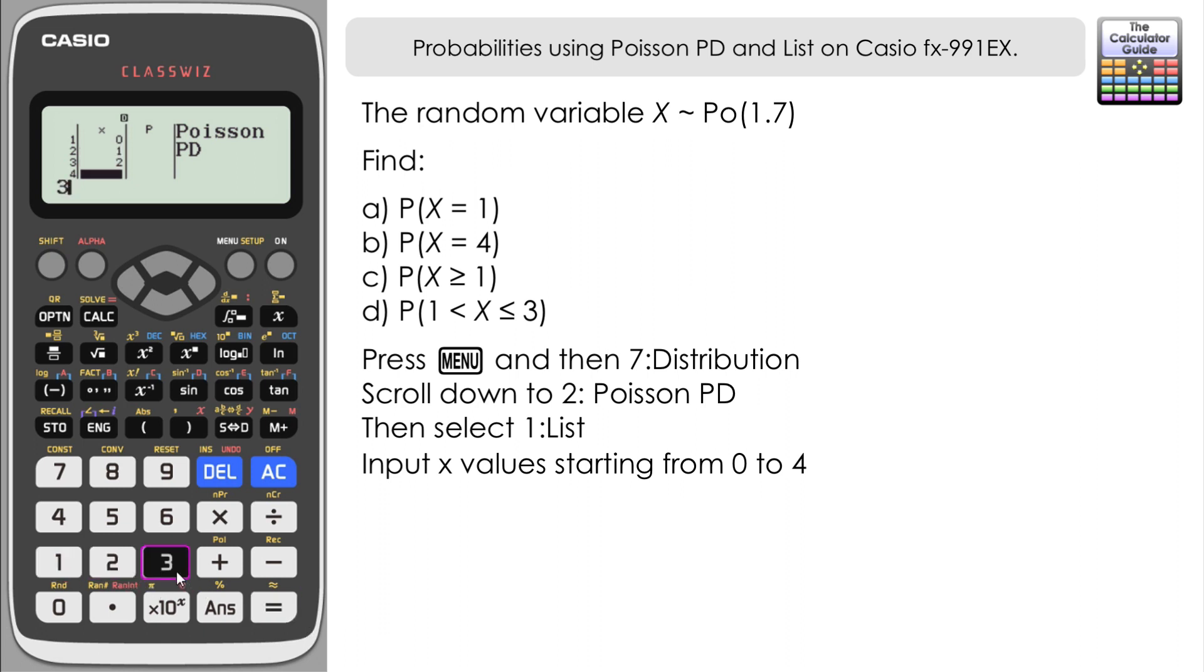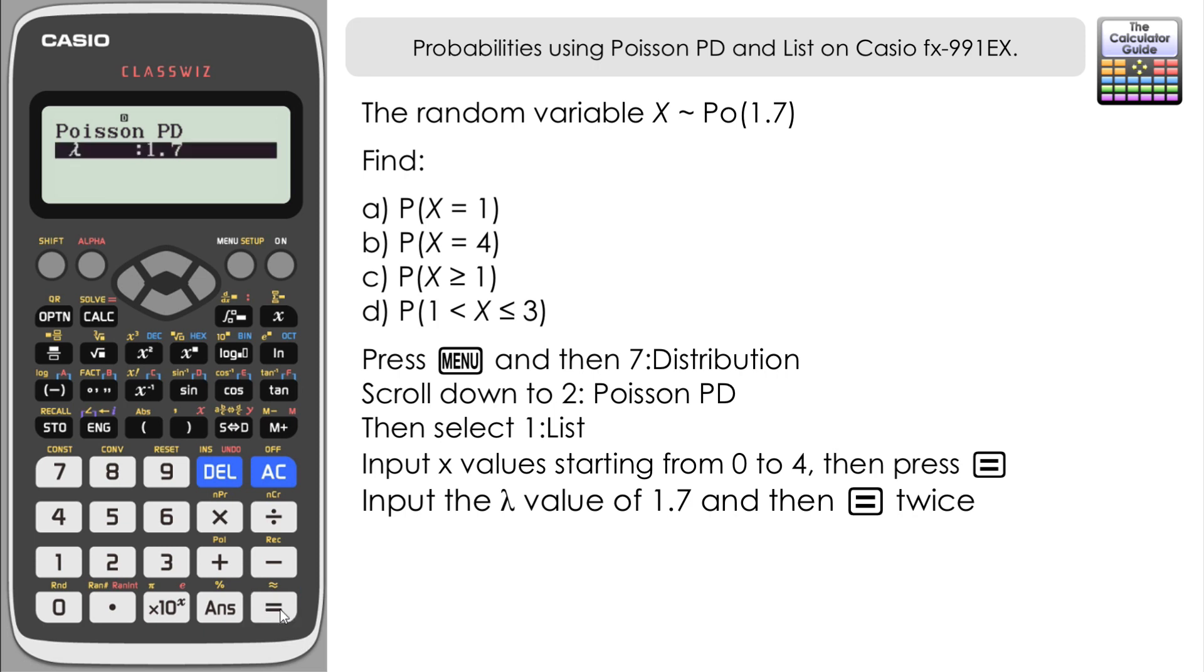Don't worry about the P column, that is where our probabilities are going to appear once we've inputted the lambda value. Once you've inputted your last x value, press equals one more time and you should receive a prompt to input your lambda value. In this example it's 1.7 and equals, then equals one more time to confirm. Now you can see that the P column has been populated with the probabilities.